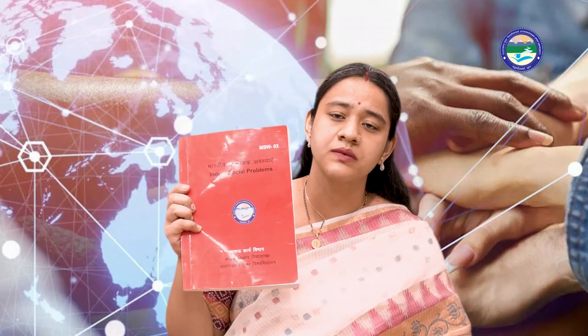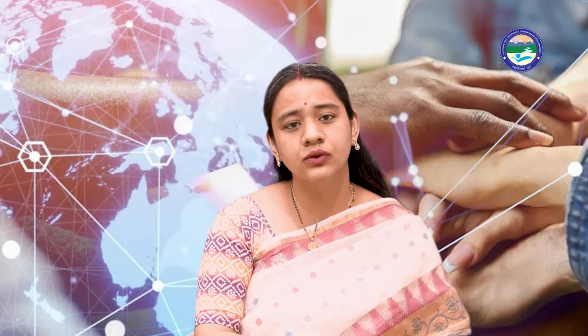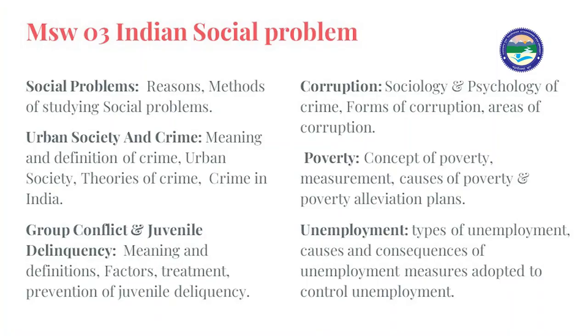Now we will discuss the self-learning material MSW 03, Indian Social Problems. I will briefly guide you through the topics — please read your books carefully. The first topic covers social problems, reasons, and methods of studying social problems. The second topic is society and crime — how society and crime are related, urban societies, theories of crime, and crimes in India.